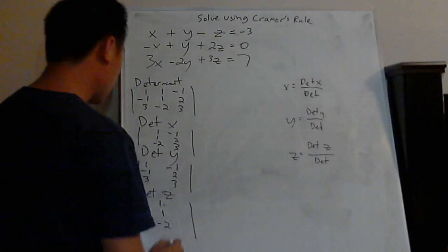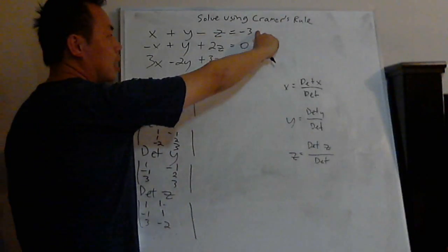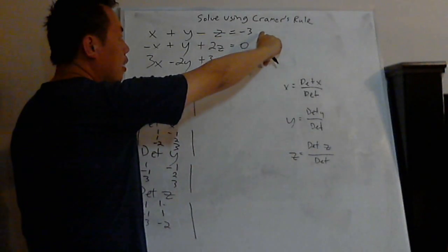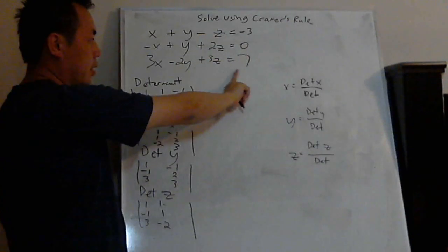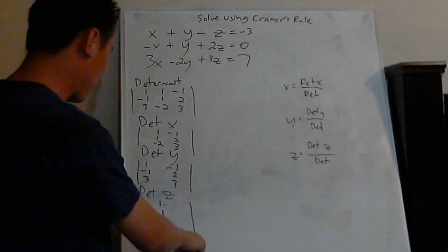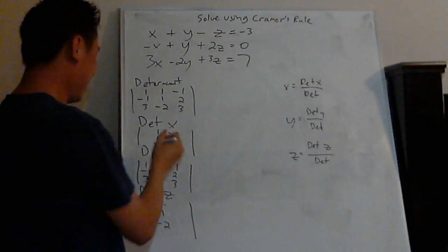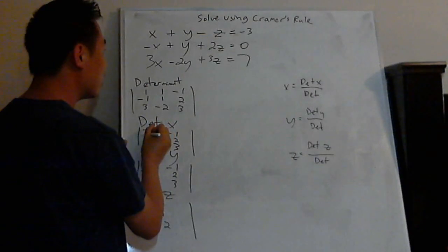Then you see the equal sign — everything to the right of this you copy back into all the blank spots. That's the easiest way to remember this.